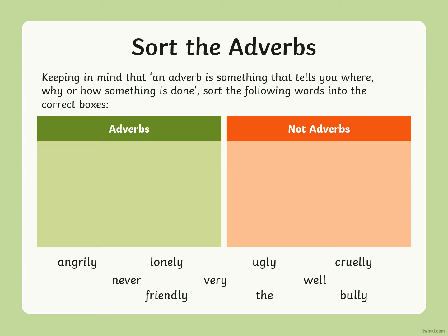Let's work through them. 'Angrily' — he did it angrily. Does that make sense? Yes, so angrily is an adverb. 'Lonely' — he did it lonely. Does that make sense? No, it doesn't. The adverb would actually be 'lonelily,' but that isn't really a word, so lonely is not an adverb. 'Ugly' — he did it ugly. That doesn't work either, so ugly is not an adverb.